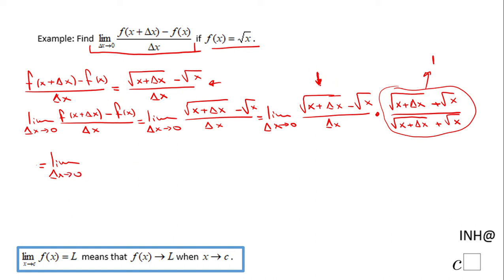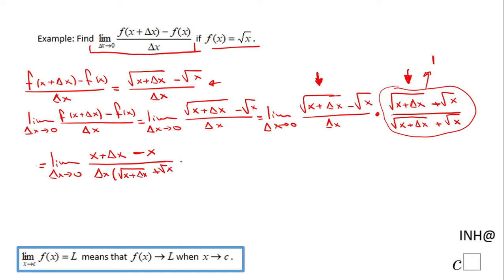When we multiply the numerators, this is a difference of squares. So we end up with x plus delta x minus x in the numerator — because square root of x plus delta x, squared, is x plus delta x. The denominator will be delta x times the quantity square root of x plus delta x plus square root of x. Now we can do some simplification.